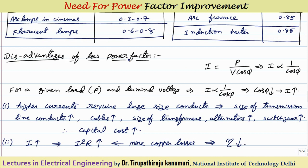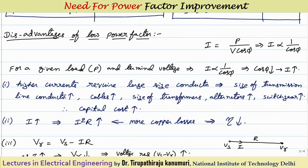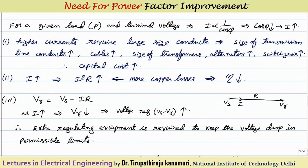What are the disadvantages of low power factor? Since most equipment operates at lagging or low power factor, and current I equals P divided by V·cos phi, for constant P and V, the current is inversely proportional to cos phi — so as cos phi decreases, the current drawn from the supply increases. When more current flows, the equipment must supply it, and starting from the transmission line, the conductor size increases. For cables, larger conductor size means larger cable size overall.